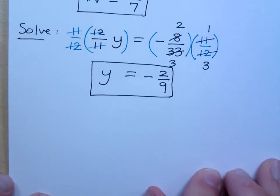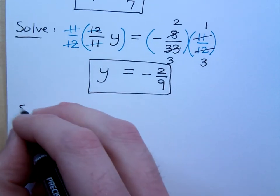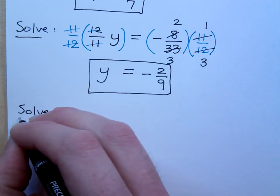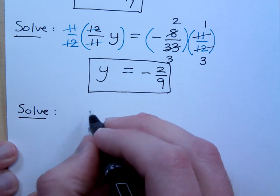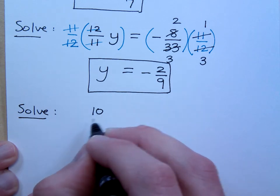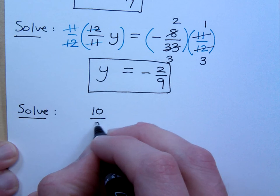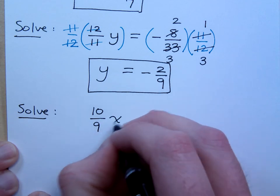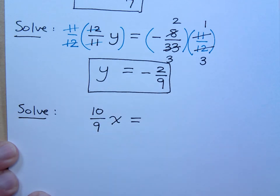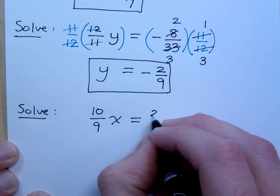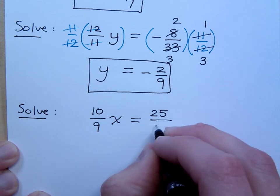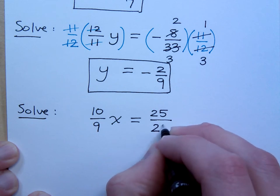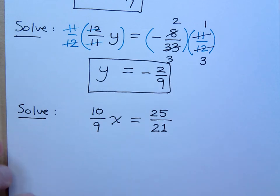Okay. Let's try another one of these, just to make sure that you are all with me. If I... Ooh, that'd be... No, I better not. If I have 10 over 9x is equal to 25 over 21.